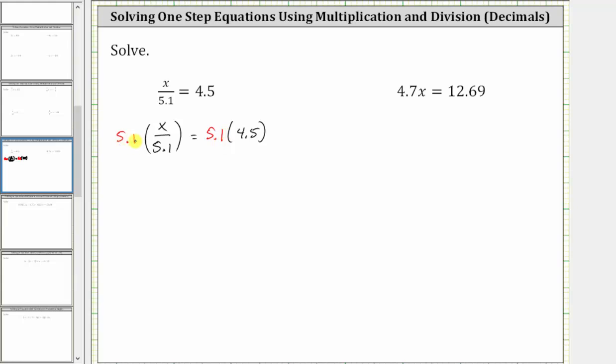On the left side of the equation, multiplying by 5.1 undoes dividing by 5.1. If we want, we can write 5.1 as a fraction with the denominator of one. Notice now we have a common factor of 5.1 between the numerator and denominator. Simplifying out the common factor of 5.1, 5.1 divided by 5.1 simplifies to one in the numerator and denominator, leaving us with one times x, which is just x.